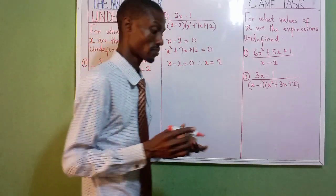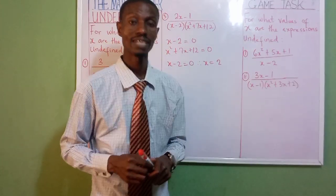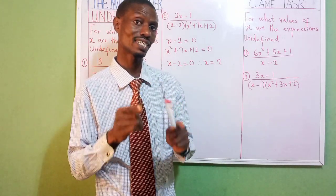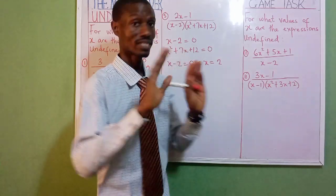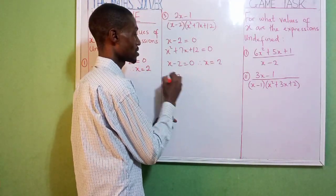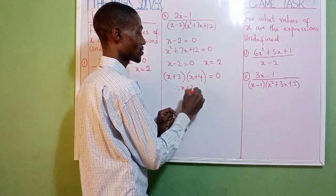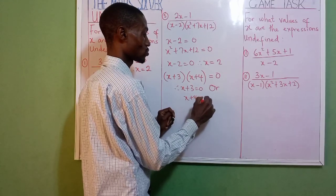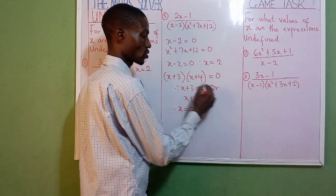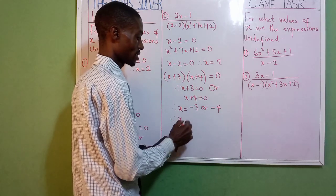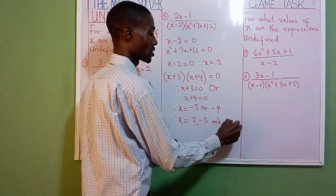For the second bracket, which is also quadratic, we use factorization again. Two numbers that multiply to give twelve: two and six give eight — no. Four and three: four times three is twelve, four plus three is seven — perfect. So we have (x plus three)(x plus four) equals zero. Therefore x plus three equals zero or x plus four equals zero, giving x equals minus three or x equals minus four. So our answers are: from the first bracket x equals two, from the second x equals minus three and x equals minus four.